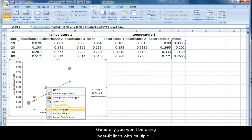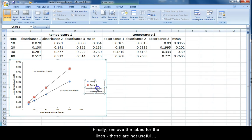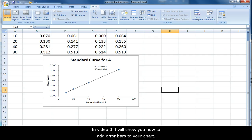Generally you won't be using best fit lines with multiple series, but if you do make sure it is obvious which equation goes with which. And finally, remove the labels for the lines. These are not useful and clutter up your graph. In video three I will show you how to add error bars to your chart.